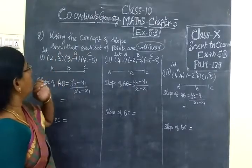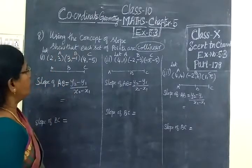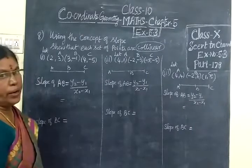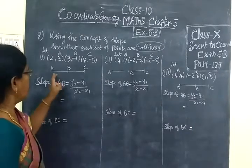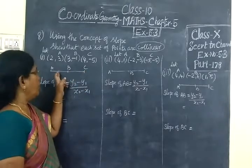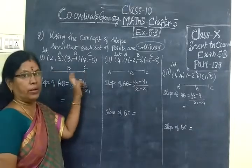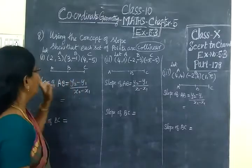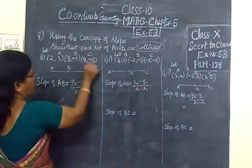Using the concept of slope, we need to show that each set of points are collinear. Collinear means there are 3 points lying on the same line. So if 3 or more points lie on the same line, they are collinear. If 3 points are collinear, we prove this using the concept of slope.